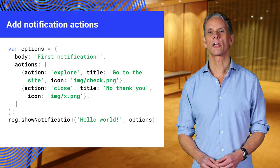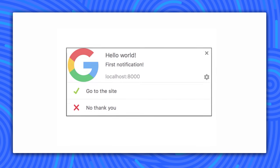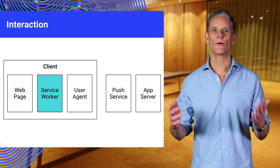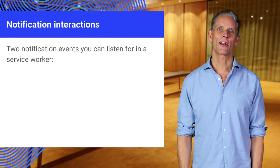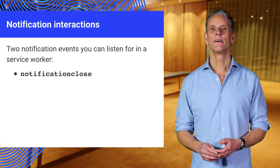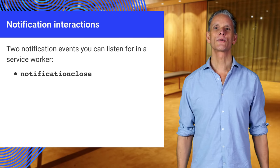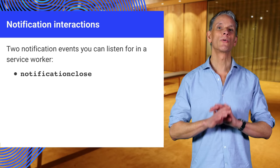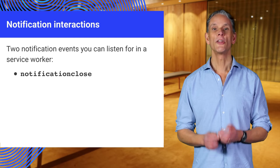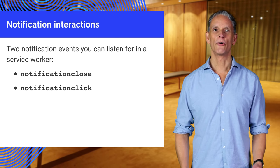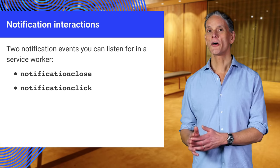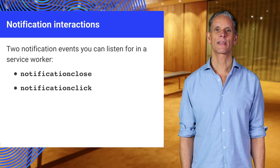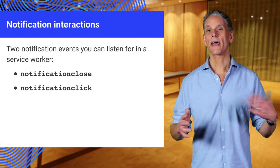We can add action buttons to the notification that we can then handle each in a different way. Notification interaction events are handled in the service worker — tapping, clicking, or closing the notification. There are two notification interactions you can listen for in the service worker: notificationclose and notificationclick. The notificationclose event only triggers when the notification is dismissed via a direct action on the notification. If the user dismisses all notifications, the event will not trigger — this is done to save resources. If the user clicks the notification or an action button, the notificationclick event is triggered. The action is attached to the event object of the notification click handler, allowing us to check which action was triggered and handle it separately.